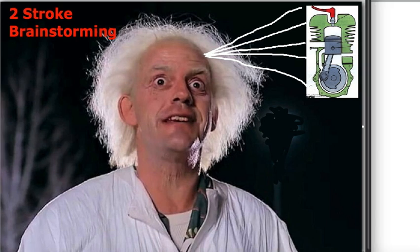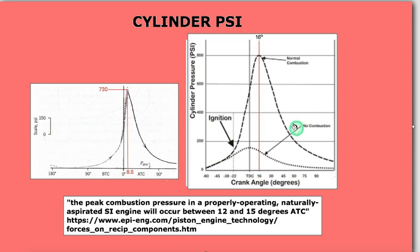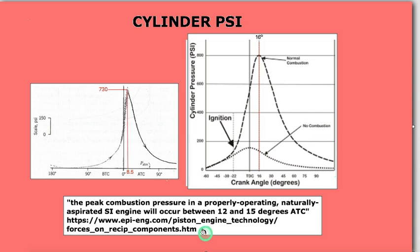Welcome back. I hope you're ready for a mental exploration in the two-stroke world. I'm sure you've seen these graphs before — they are of the cylinder pressure due to combustion and compression. This graph shows a peak at 8.5 degrees after top dead center, and this one shows a peak at 16 degrees after top dead center. A reliable source states that peak combustion pressure in a properly operating naturally aspirated spark ignition engine will occur between 12 and 15 degrees after top dead center.